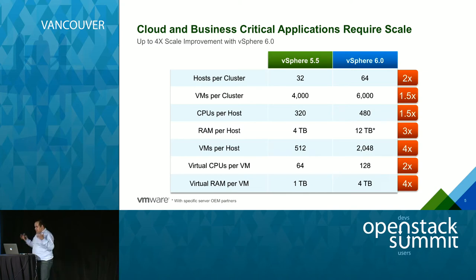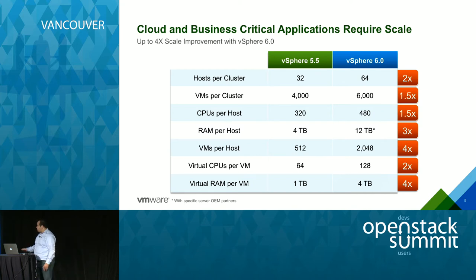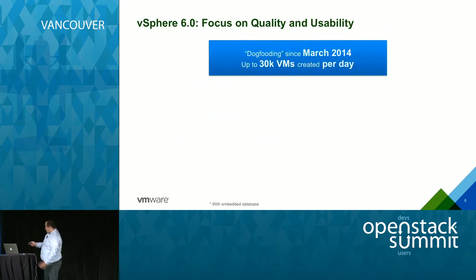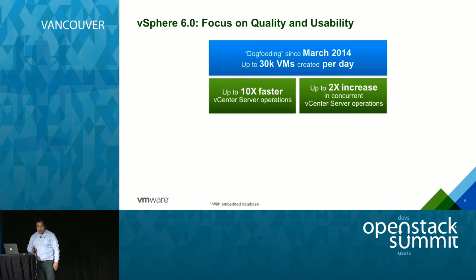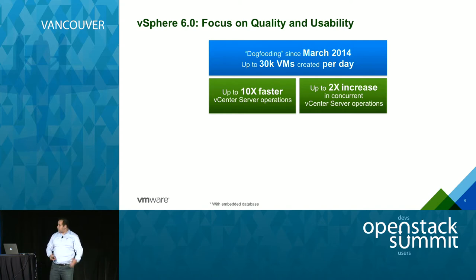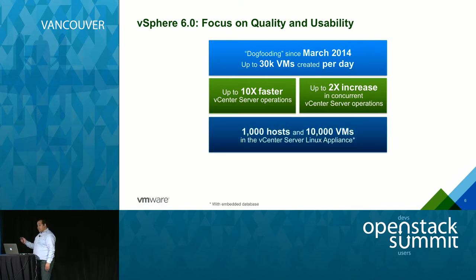As vSphere is the foundation, you shouldn't worry about any limitations in terms of which approach you take over your infrastructure. We tested vSphere very heavily inside VMware — sometimes 30,000 VMs were created per day as part of our dogfooding. We can have up to 10,000 VMs per vCenter cluster, with much faster performance and a lot of usability enhancements.